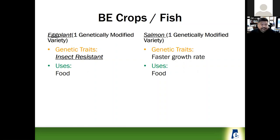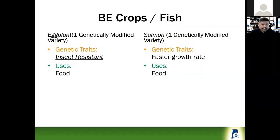Eggplant is a bioengineered crop not available in the United States but available internationally, in the Bangladesh area. It has insect resistance and has made great strides for their economy and farmers there because they chose to adopt the genetically modified eggplant to combat root borers that were causing a big concern. Farmers had become over-reliant on pesticides and were having issues with safety training and handling large quantities of chemicals.